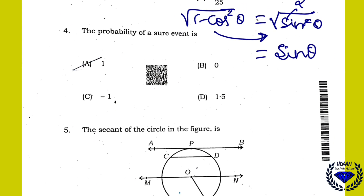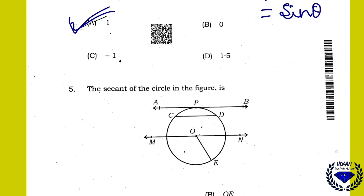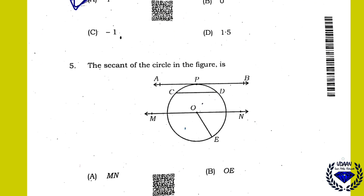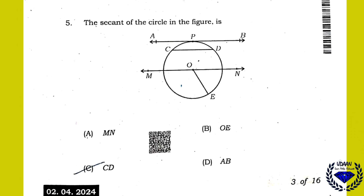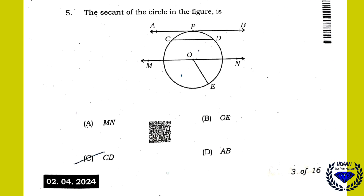Question 4: The probability of a sure event — that means it will definitely happen — is 1. Question 5: The secant of the circle in the figure is line MN, because a secant is a line which cuts the circle at 2 points.